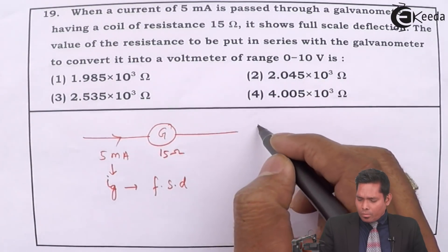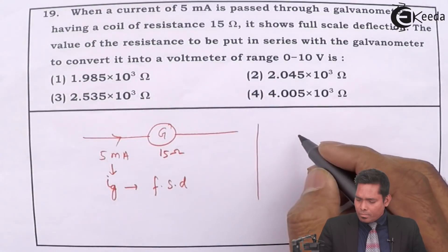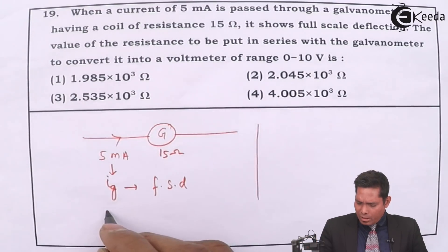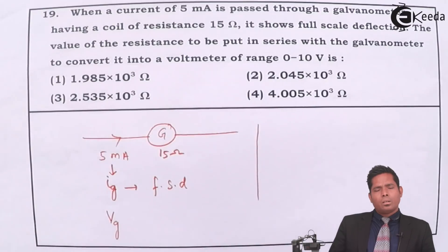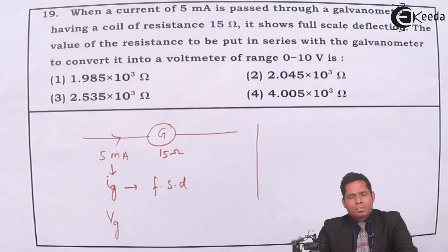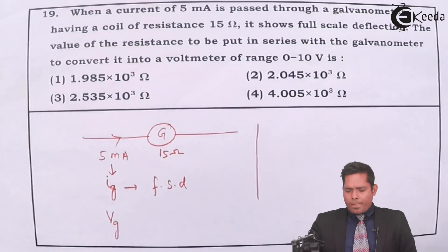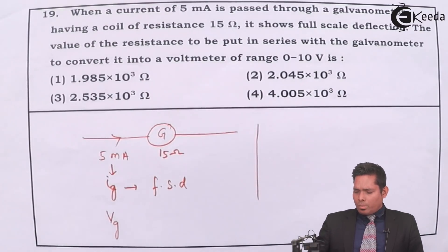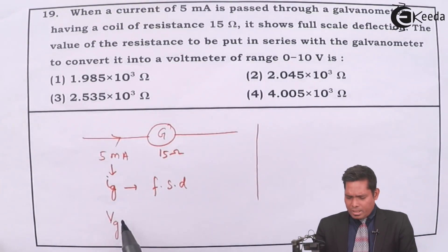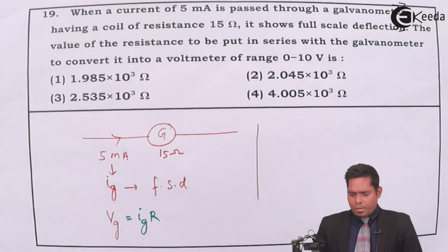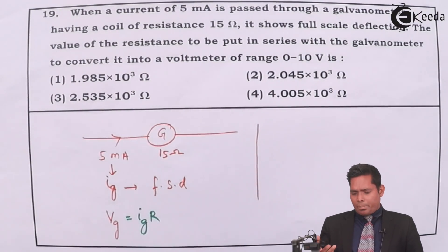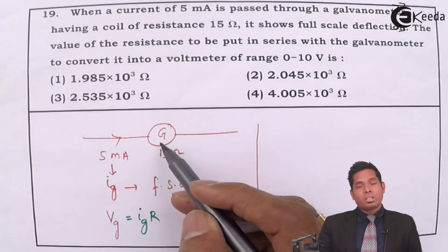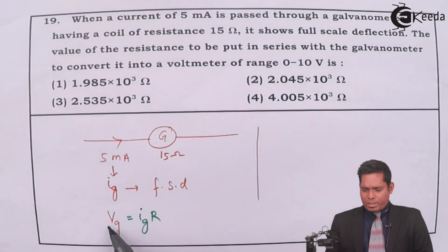So what I have to do is, I have to first measure what is the V_G. What is the initial potential difference, maximum potential difference this galvanometer can measure without when the high resistance is connected in series. So before the resistance is connected, obviously I_G into R, because potential difference depends on the resistance, which is fixed.